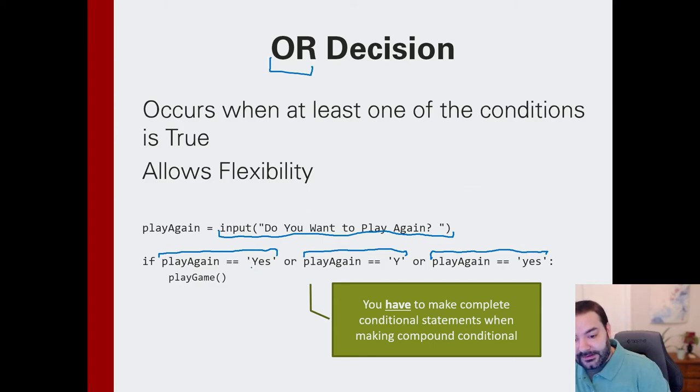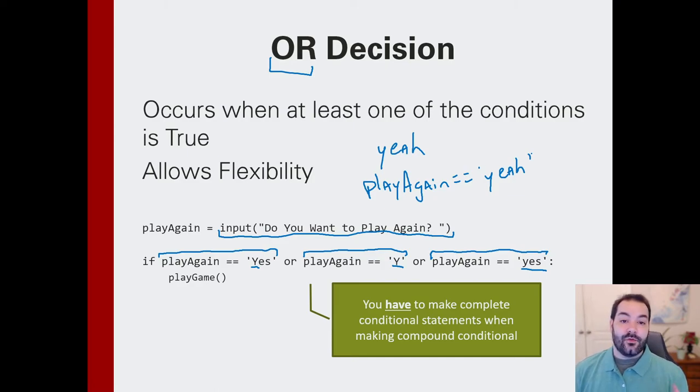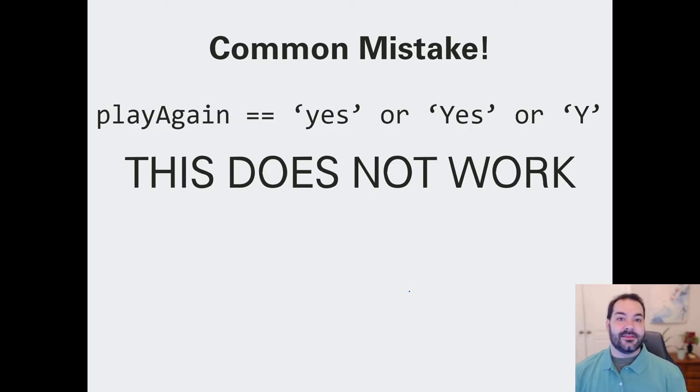They may type yes with a capital Y. They may just type a capital Y. They may type yes with all lower cases. They may even go yeah, because I don't control the users. But all we would then need to do is, again, just do a play again equal equal yeah. Now, with that in mind, very important here, you have to make a command separate. Each one of these has to be separate. This is not going to work. Play again equals yes or yes or yes. That does not work.